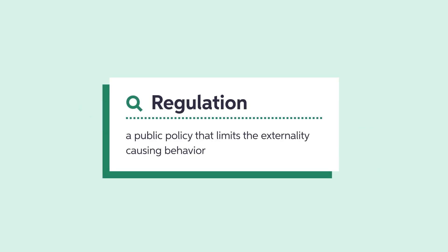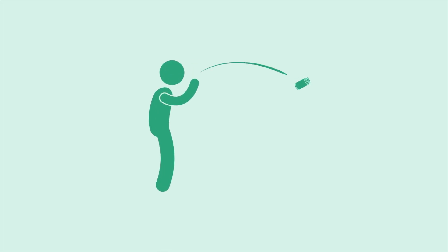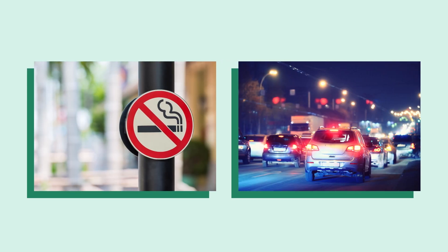When the government wants to stop a negative externality, they may try regulation. Regulation is a type of public policy that completely limits the externality-causing behavior. Littering is illegal in most places because it harms the environment, and it offers little benefit to the person littering, which makes it easier to impose a regulation. Some other common regulatory policies are non-smoking policies and noise regulations at night. The goal of every public policy that uses regulation is to limit negative externalities.